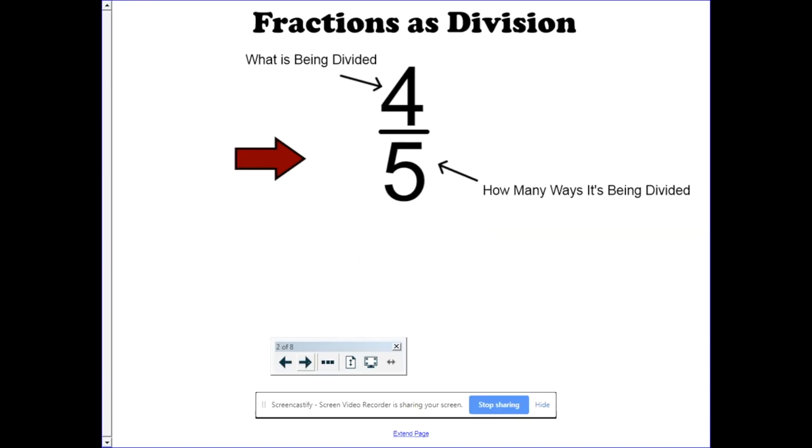And in a fraction, whatever's being divided goes on top. That's your numerator. And how many ways it's being split goes in the bottom. That's your denominator. So if I had four pounds of candy to split between five baskets, it'd be 4 pounds divided by 5 baskets, or each basket would get four-fifths of a pound.